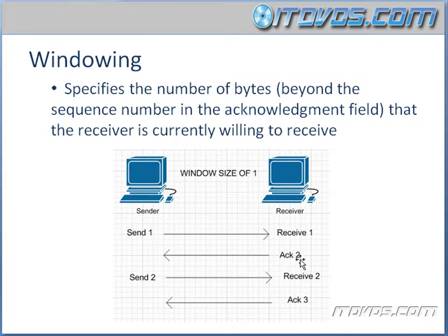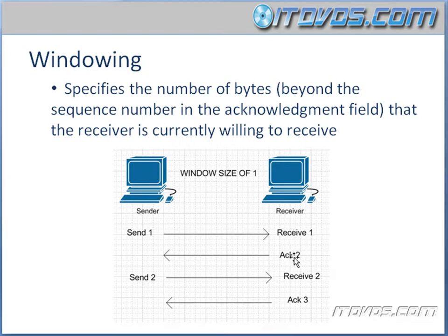It's very important to notice the acknowledgment numbers here, because the acknowledgment number is the number of what it's expecting next. So it's not saying 'I received segment one, so I'm going to send back ACK one.' It's saying 'I want segment two now.' Or down here, you can see it received number two, so it wants number three next.